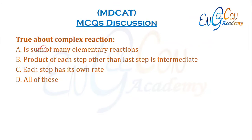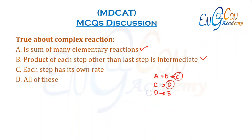What is true about a complex reaction? It is the sum of many elementary reactions — correct, as it is composed of many single steps. The product of each step other than the last is an intermediate — also correct. Each step has its own rate, and the slowest step is the rate-determining step. All of these are correct options.